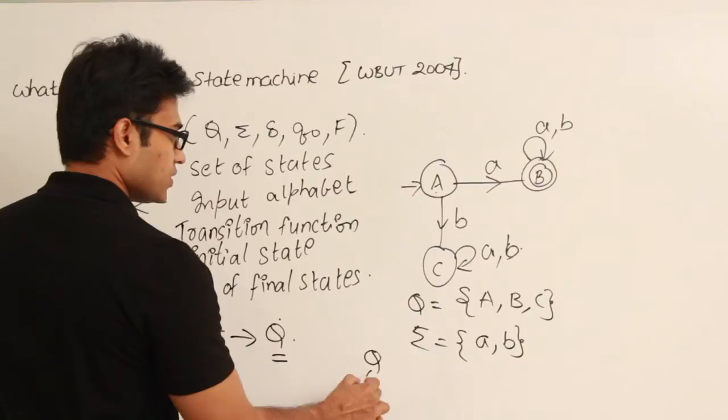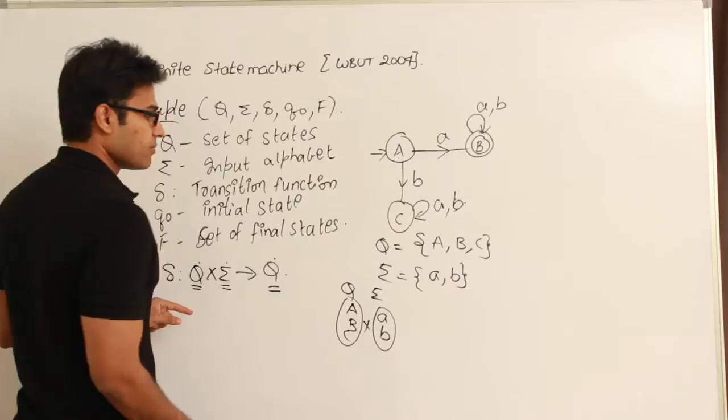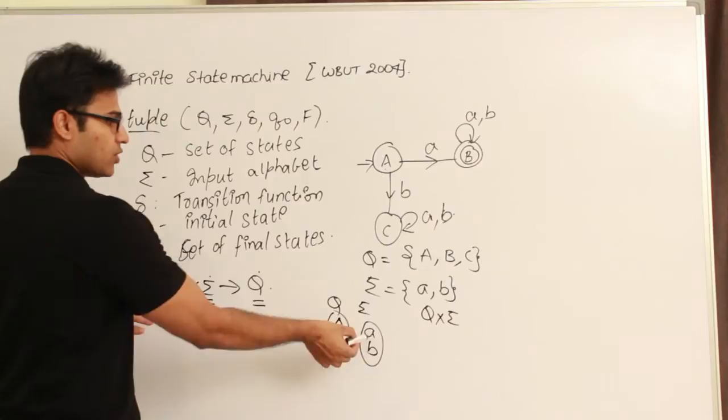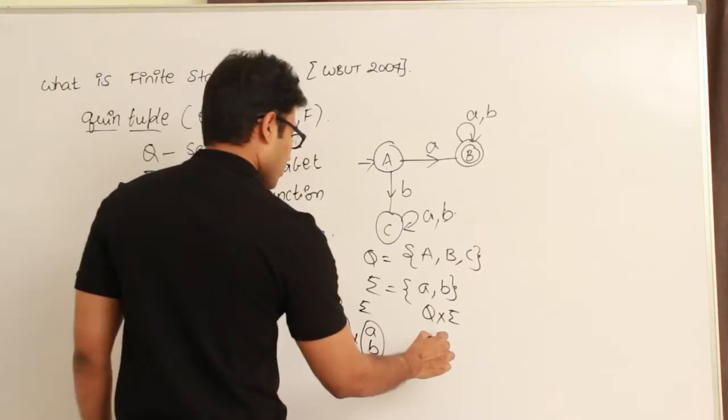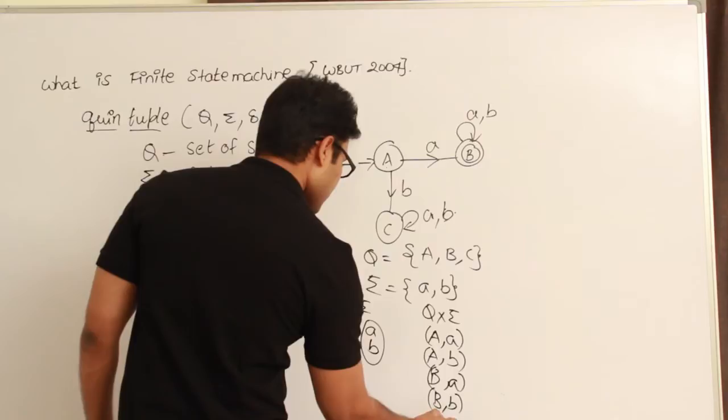Q cross sigma: Q contains three elements {a, b, c} and sigma contains two elements {a, b}. In the cross product we get six elements: (A,a), (A,b), (B,a), (B,b), (C,a), (C,b).